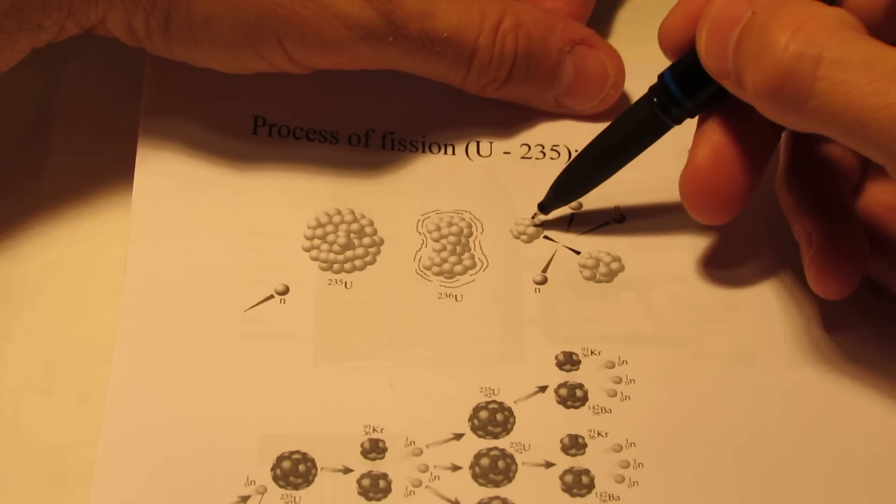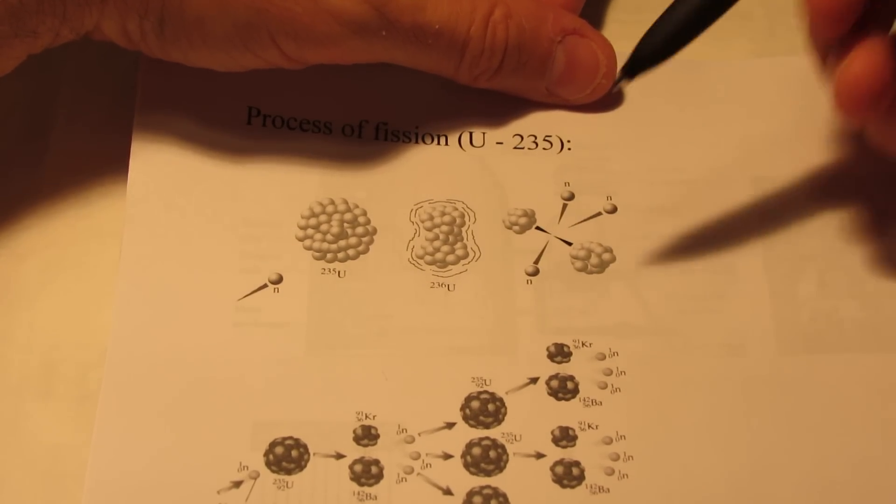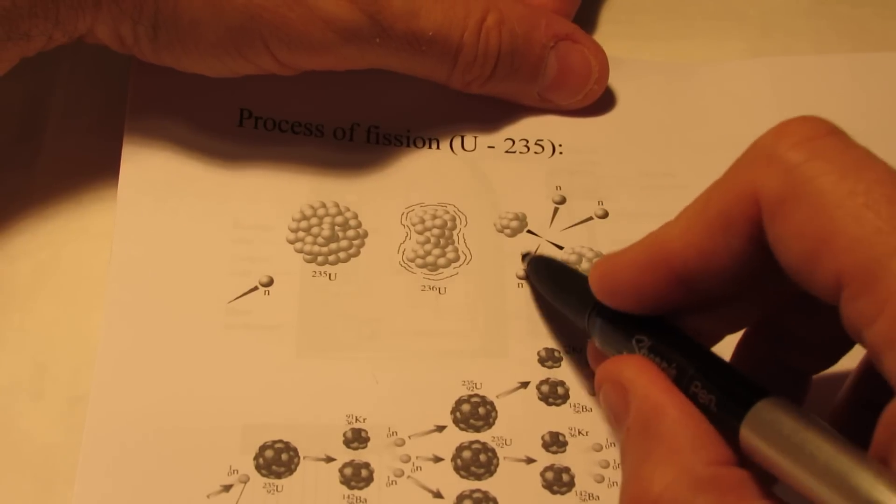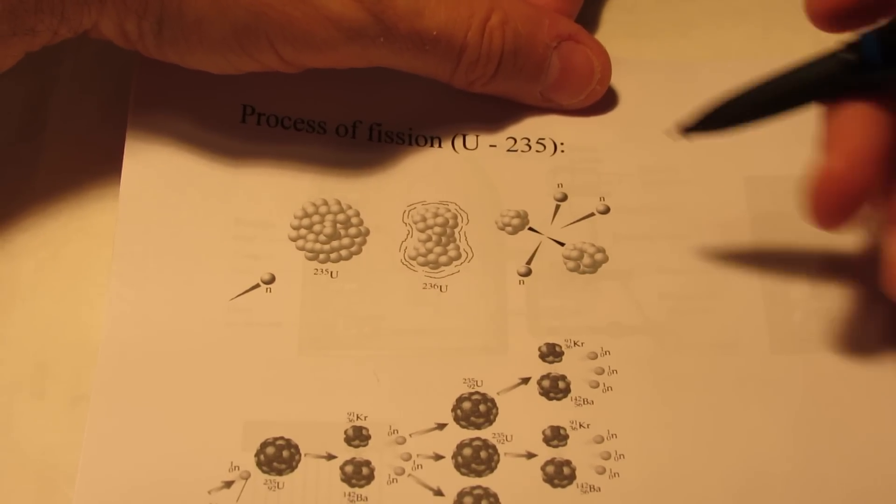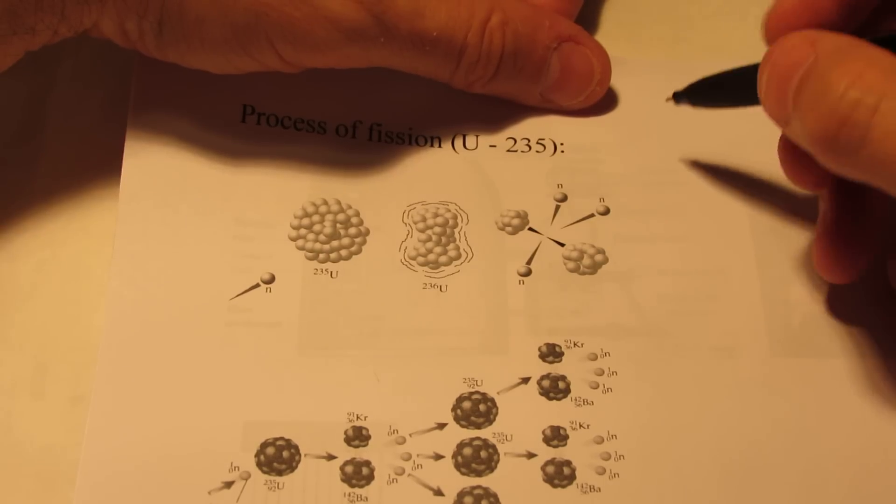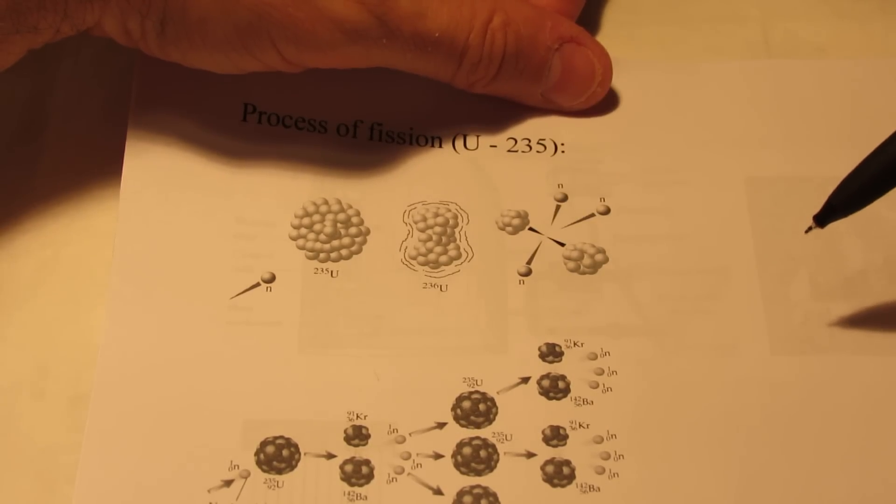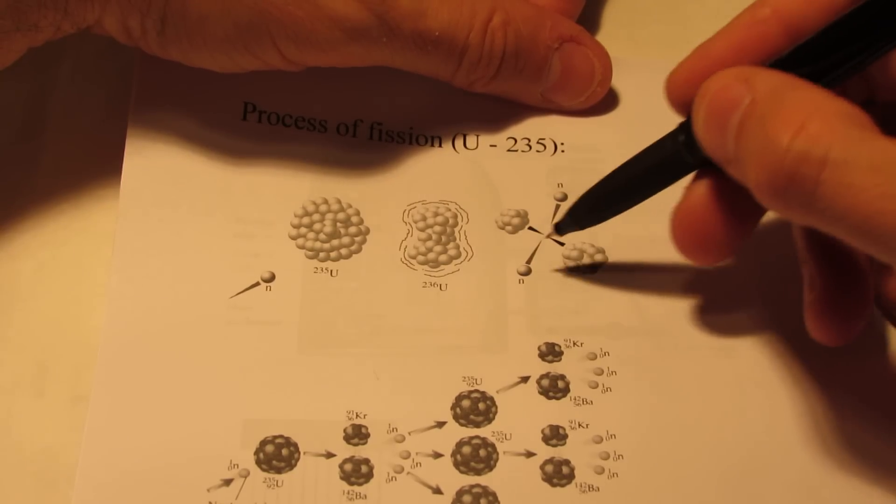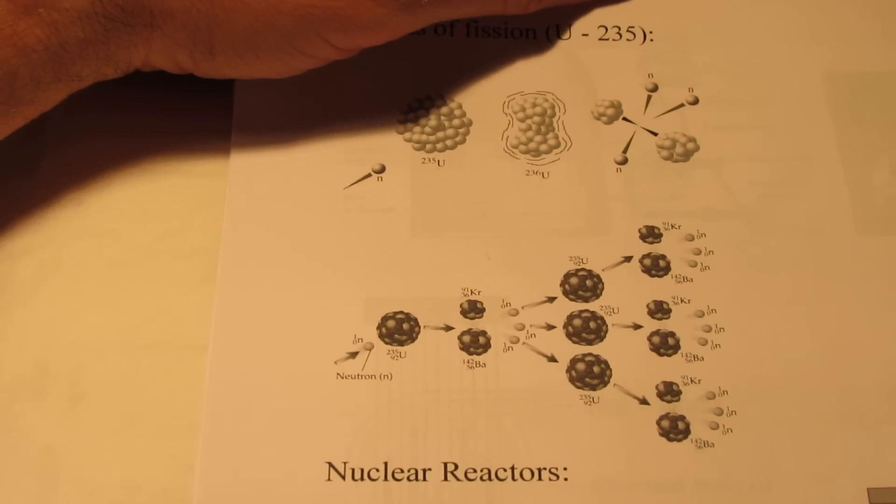Now along with two lighter nuclei that are produced, additional neutrons are made. In this particular collision, we get the two lighter nuclei and we get three more neutrons. Now what can those three neutrons potentially do? Well, potentially they could strike three more uranium-235 nuclei and cause them to split, each time releasing three more neutrons. And of course, you can see what would happen - we end up with what's known as a chain reaction.